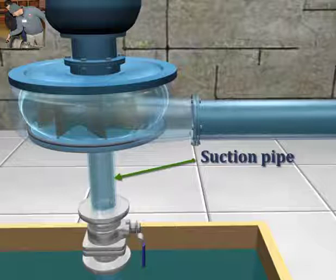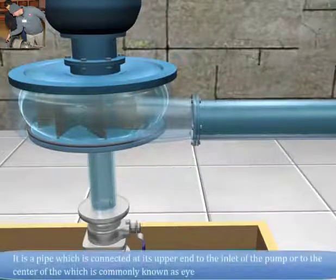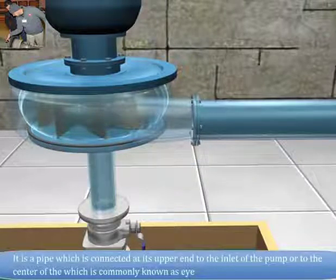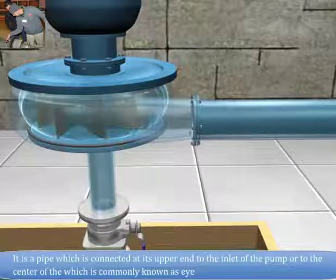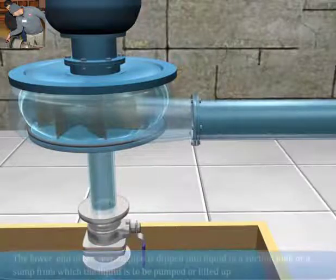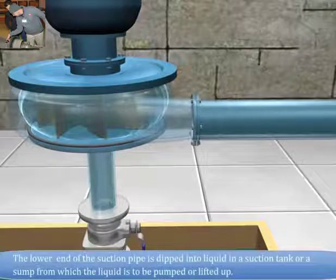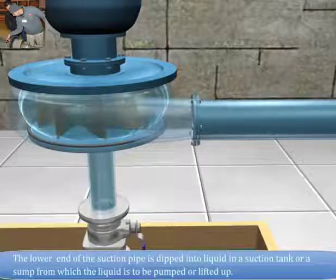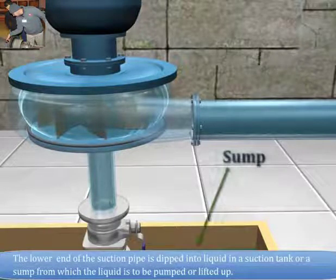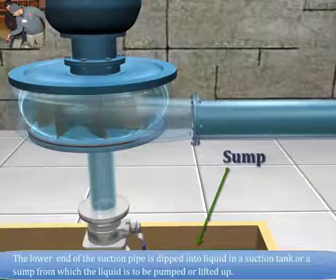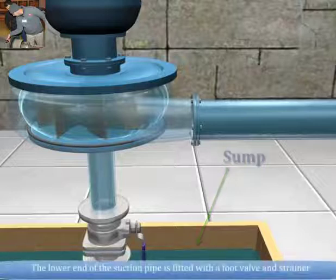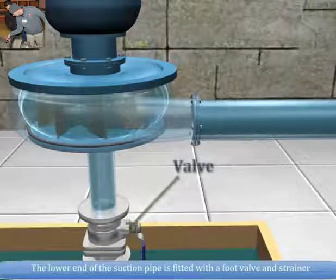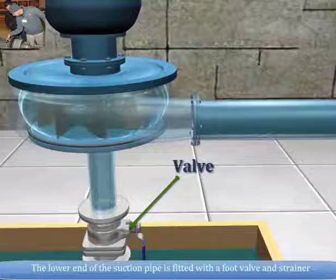Suction pipe. It is a pipe which is connected at its upper end to the inlet of the pump or to the center which is commonly known as eye. The lower end of the suction pipe is dipped into liquid in a suction tank or a sump, from which the liquid is to be pumped or lifted up. The lower end of the suction pipe is fitted with a foot valve and strainer.